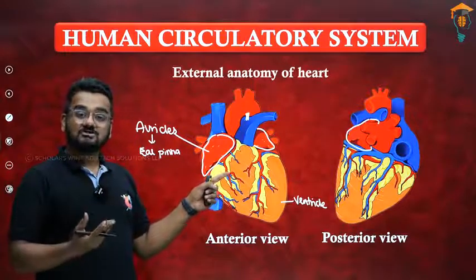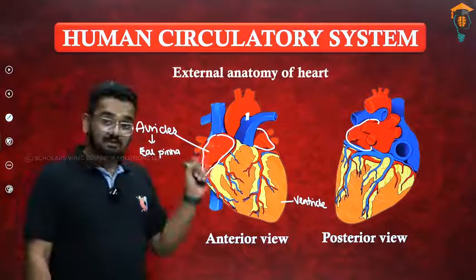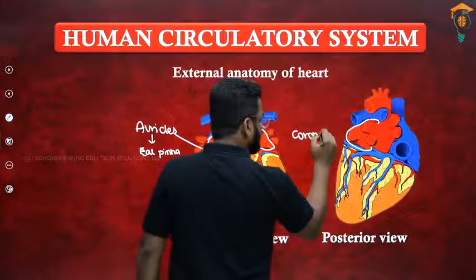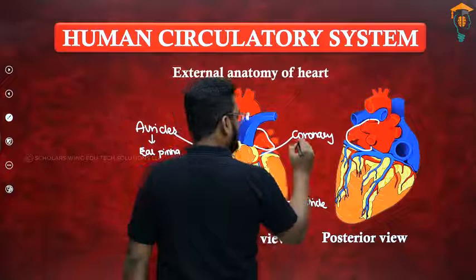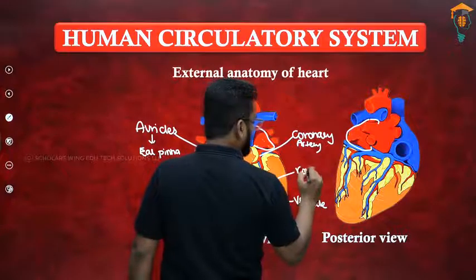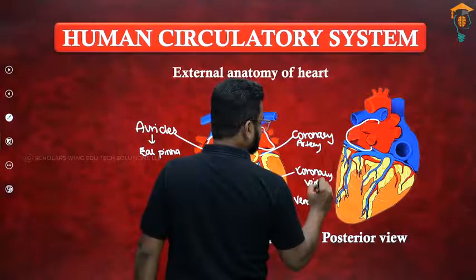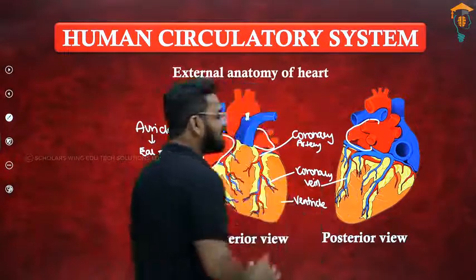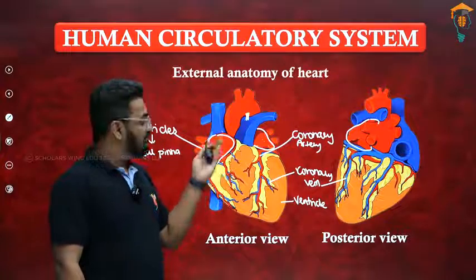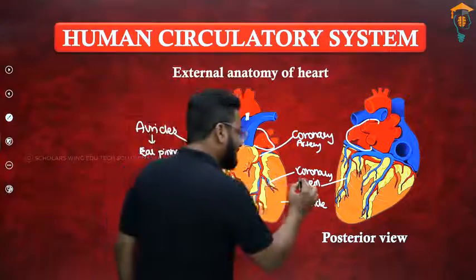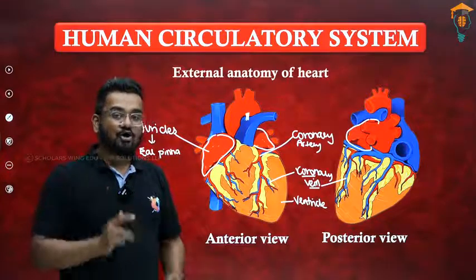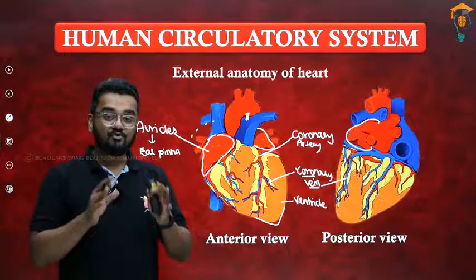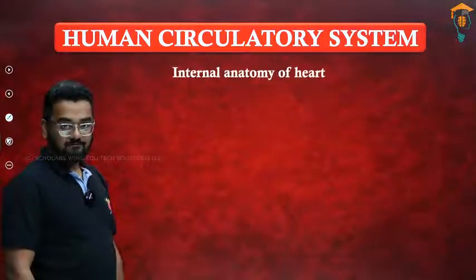The heart pumps blood to different organs, but the heart itself is also a tissue — it is a muscle — so it also needs nutrients and oxygen and produces carbon dioxide. The circulatory system supplying the heart is referred to as the coronary circulation. Coronary arteries supply oxygenated blood to the heart, and coronary veins collect the deoxygenated blood from the heart. The oxygenated blood comes from the heart itself, and the deoxygenated blood goes back to the heart.